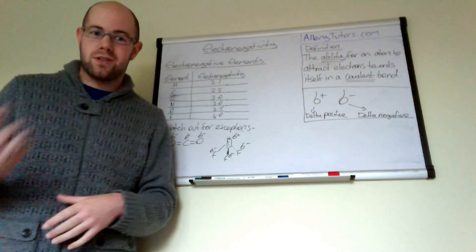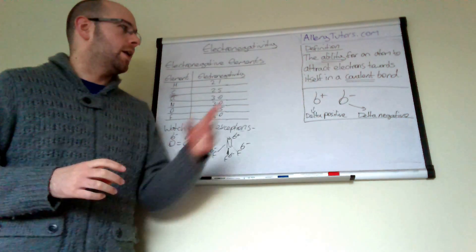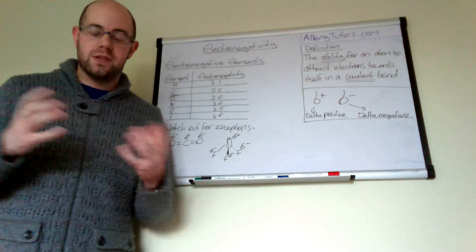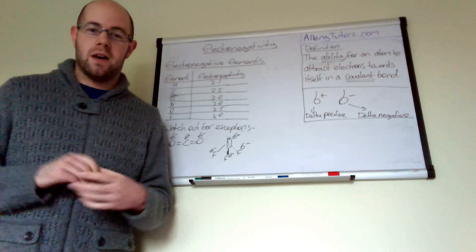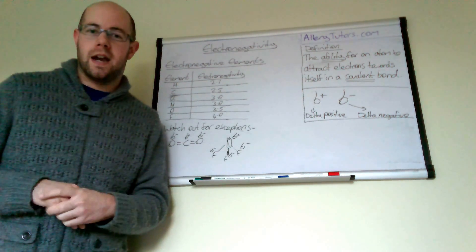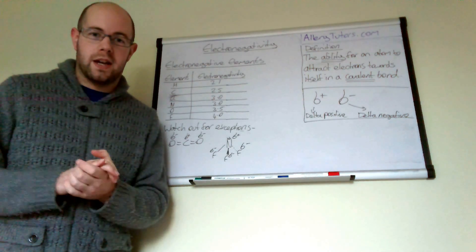But some molecules, for example H2 and Cl2—ones where you've got two atoms that are the same—actually have purely covalent character and no ionic character, mainly because there's no polarity there.